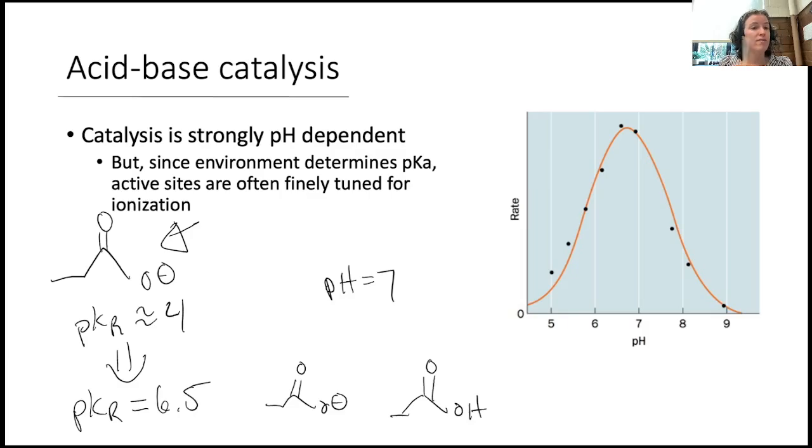So all this to say that any R group can do acid-base catalysis as long as its pKa is within reason close to the pH of the environment. Now keep in mind, as we've just walked through as well, that the environment can determine the pKa, and we will see today how that is very true for some R groups. Next up, we will learn two different mechanisms that share many similarities.